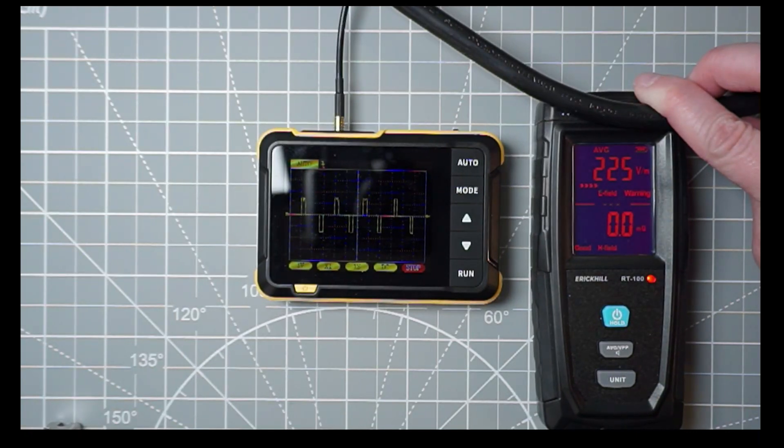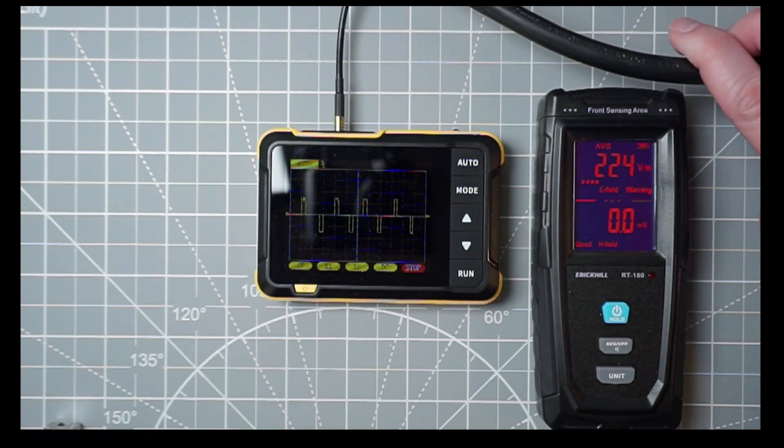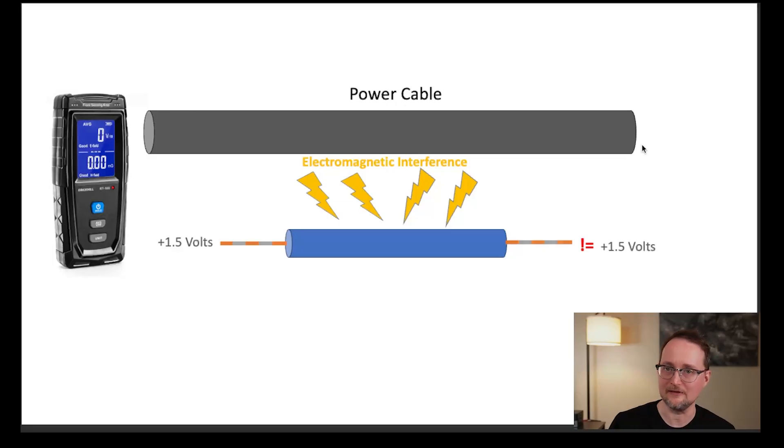So the challenge we face here is that this electromagnetic interference can alter the voltage being sent down the Ethernet cable and cause some problems. Next, let's take a look at how that works. So here's that power cable we just seen that's altering the voltage in a very small way. If we hold it next to an Ethernet wire, you can see that the voltage is going to be a little bit higher or lower than 1.5 volts.